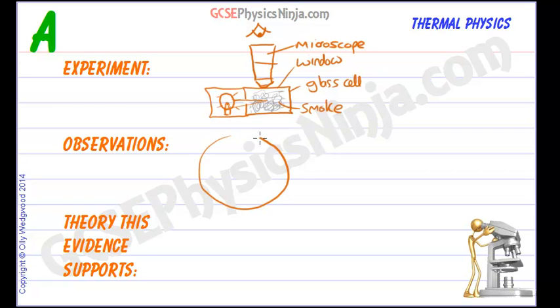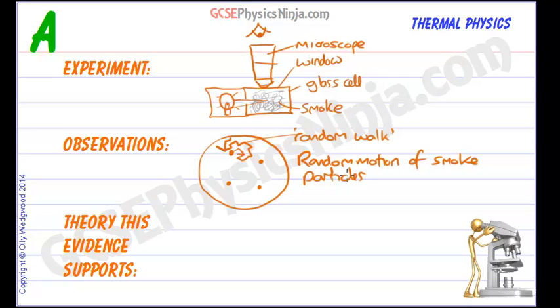And what we will see down this microscope will be little smoke particles. So this is kind of what you would see down the microscope. Little smoke particles which are moving around and they are moving in strange ways. A typical path might be something like this, a kind of random walk. And we can describe this as a random motion of smoke particles.